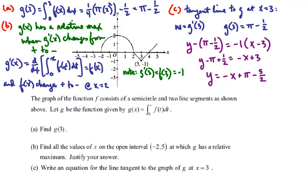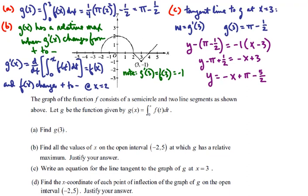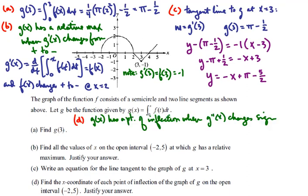Finally, for part d, we want to find the x-coordinate of each point of inflection of g on the open interval from negative 2 to 5. So we know that g of x will have a point of inflection whenever g prime prime of x changes sign.